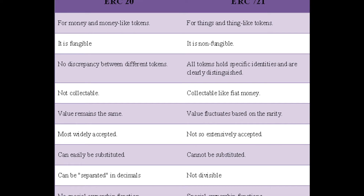There are some other differences between ERC-20 and ERC-721 tokens. With ERC-20 tokens there's no difference between tokens — one token is no different from another. Whereas with ERC-721 tokens, the tokens have specific identities and are not the same thing; one ERC-721 token is not the same as another. Because of that, ERC-721 tokens can be collectible and their value can fluctuate based on the underlying NFT. ERC-20 tokens are also more widely adopted, easy to substitute, and because they function more like money, they can be separated into decimals and split into smaller pieces — which is not the case for ERC-721 tokens.